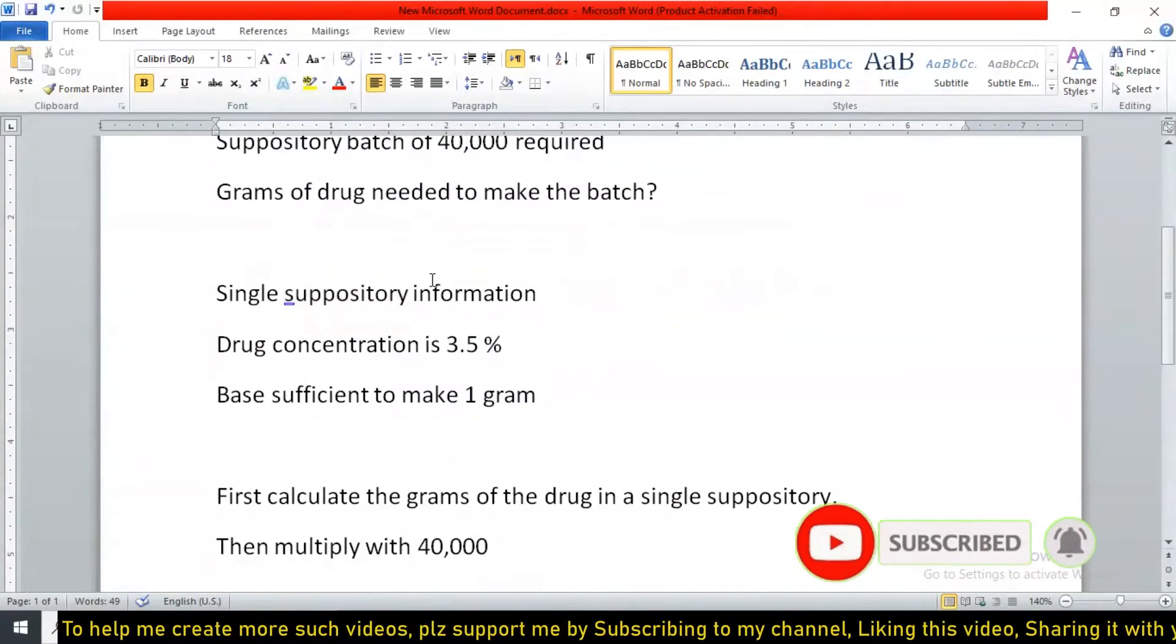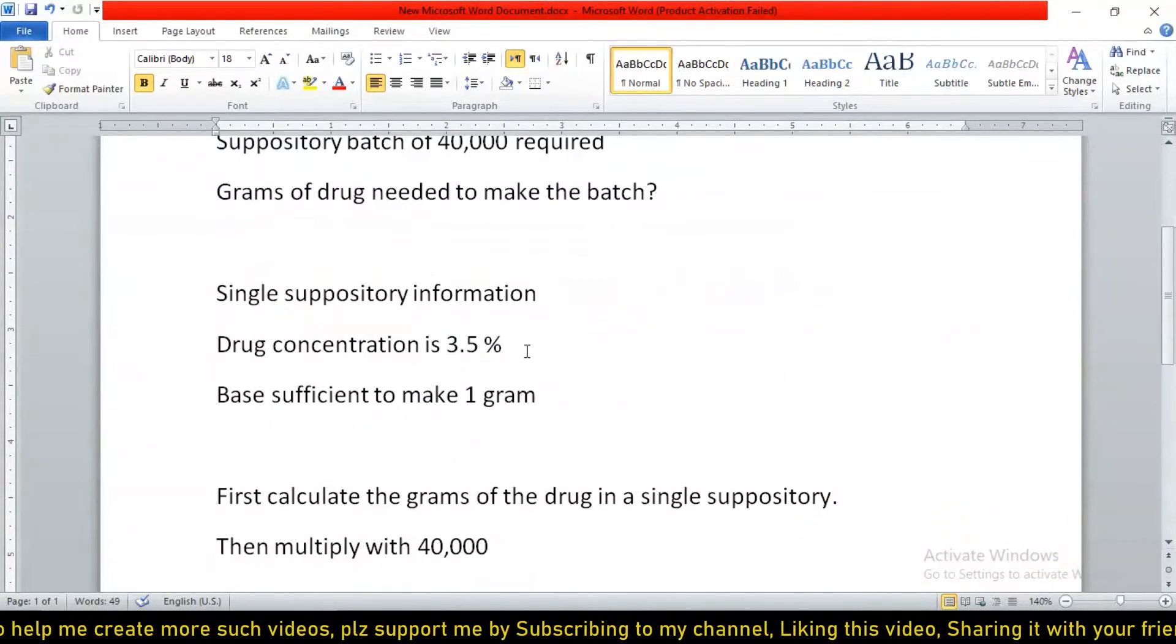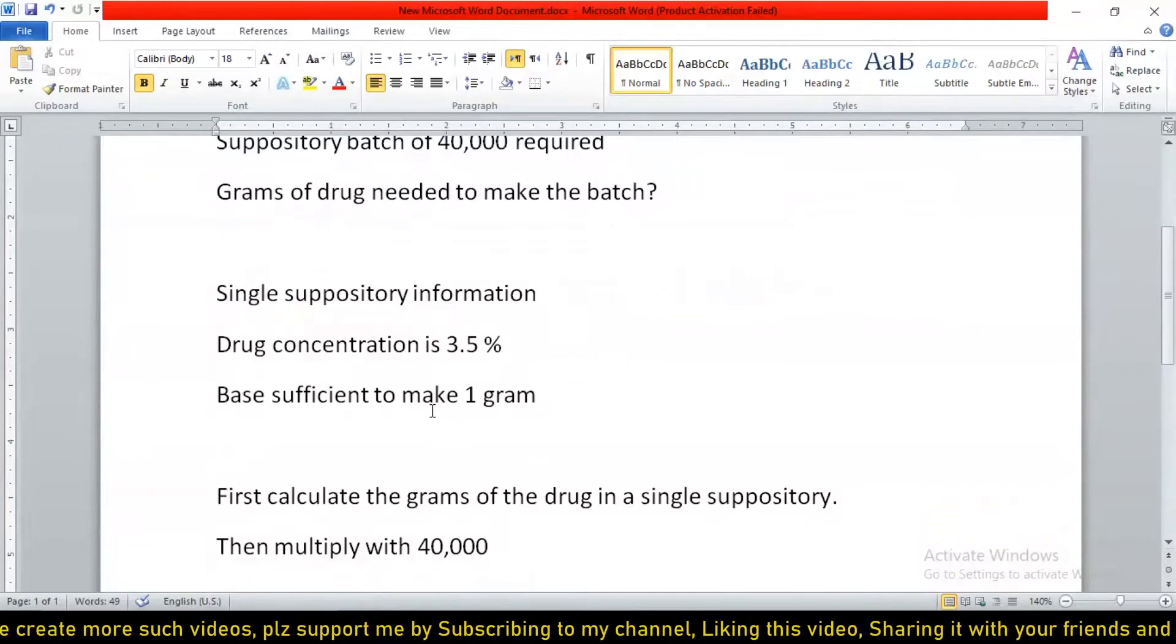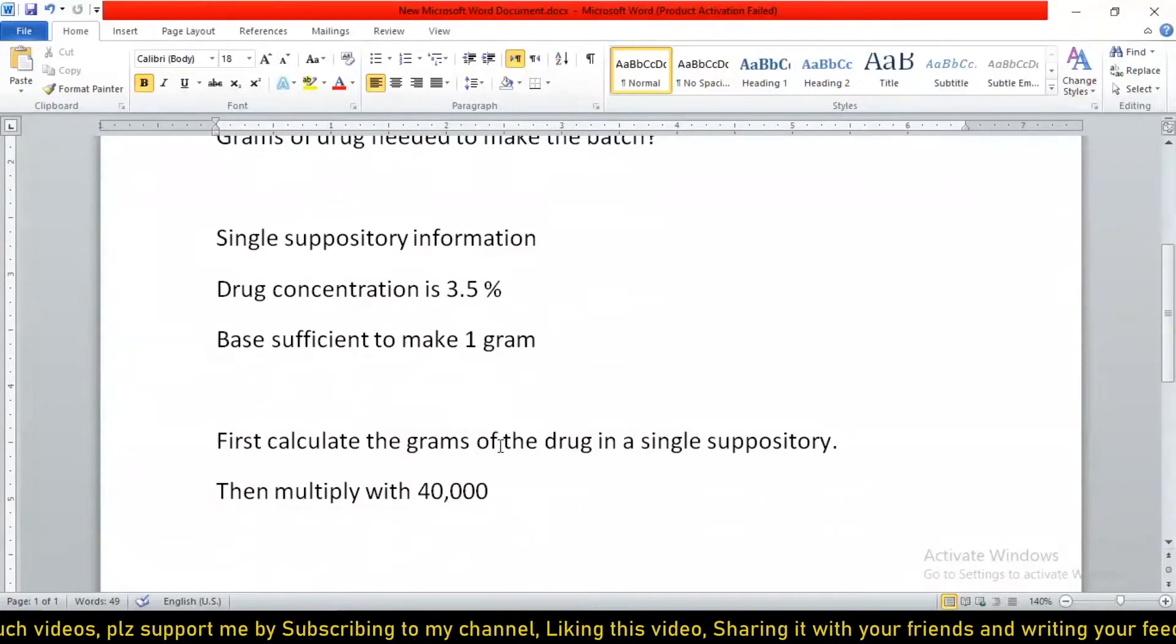So first we have to calculate the grams of the drug in a single suppository, and then we can multiply that with 40,000 and we will get our answer. So it can be solved as: in a single suppository formulation, the drug concentration is 3.5%. We have to calculate the grams of the drug in a single suppository first, and then multiply with 40,000.